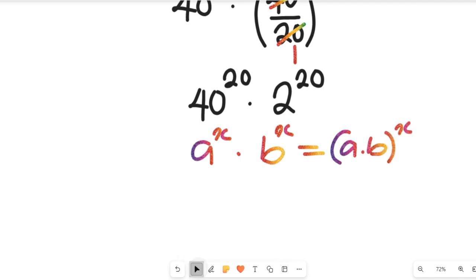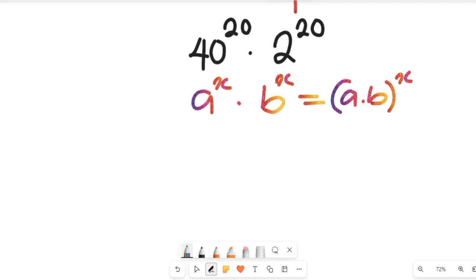Now if you look at that expression very well, that means this expression can be simplified to 40 multiplied by 2, all to the power of 20. So the final result is equal to 80 to the power of 20.